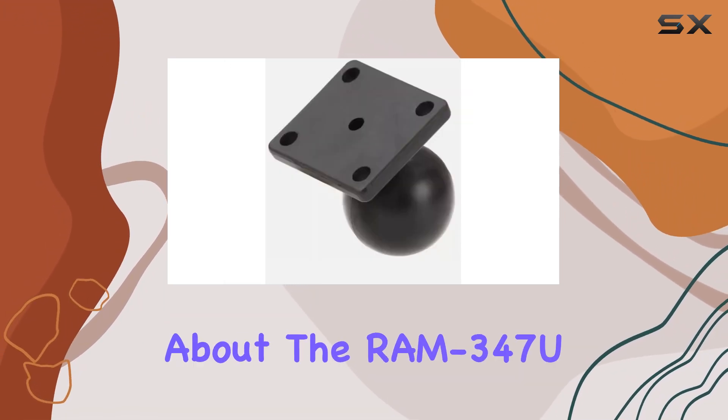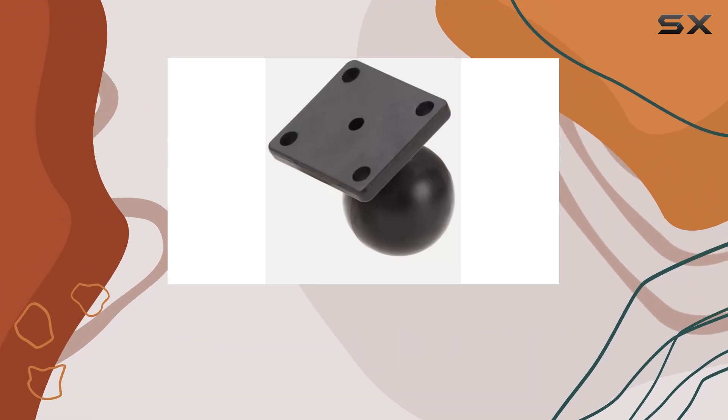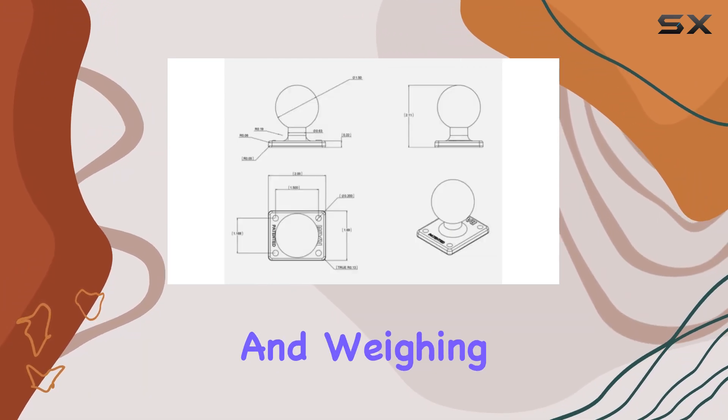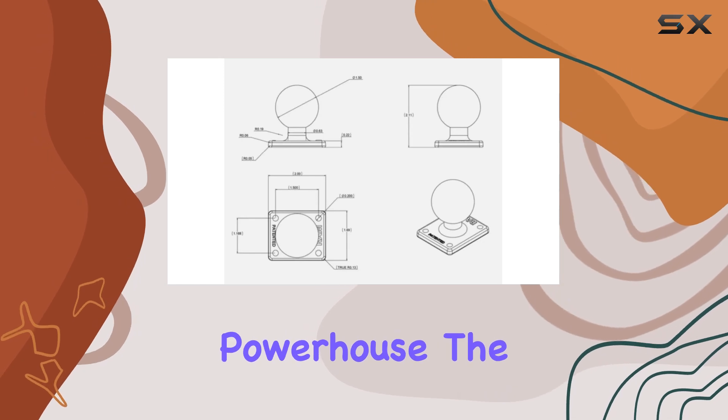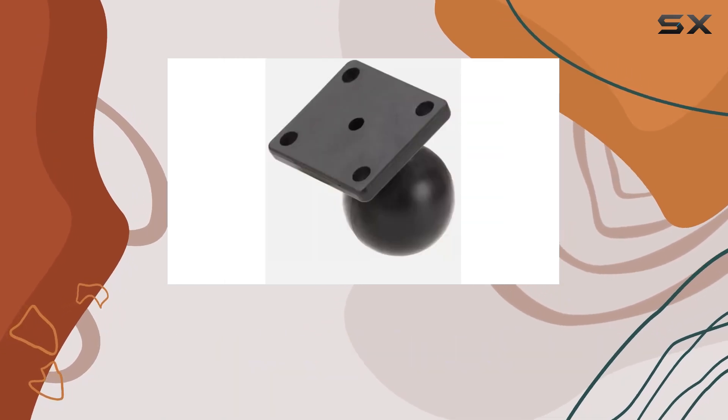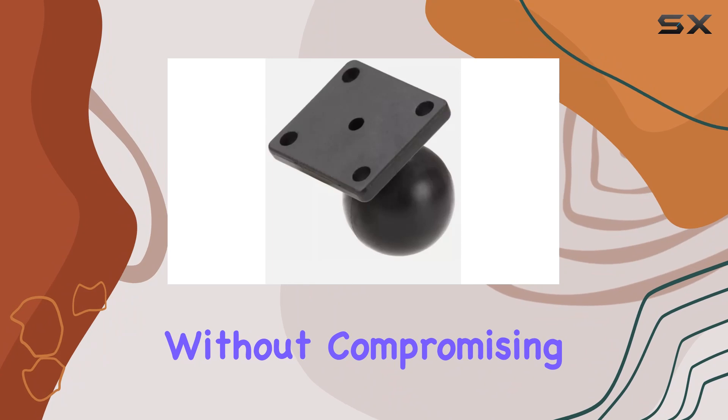Now, let's talk about the RAM 347U specifically. With a sleek black finish and weighing just 3.2 ounces, it's a lightweight powerhouse. The aluminum construction ensures durability without compromising on portability.